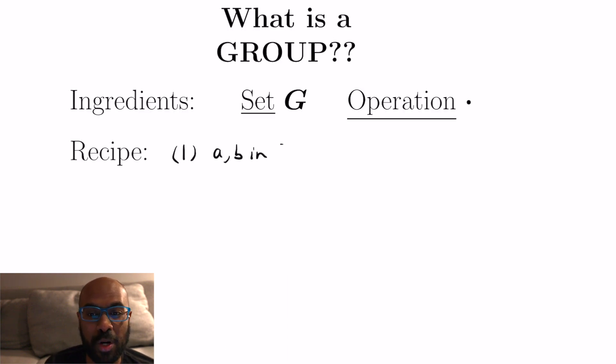So now I want to introduce what a group is. The ingredients are a set G and an operation dot. And the operation has to obey properties that we saw in the examples before. So the first part is if you have two elements of G, then the operation a dot b has to be something in G itself.